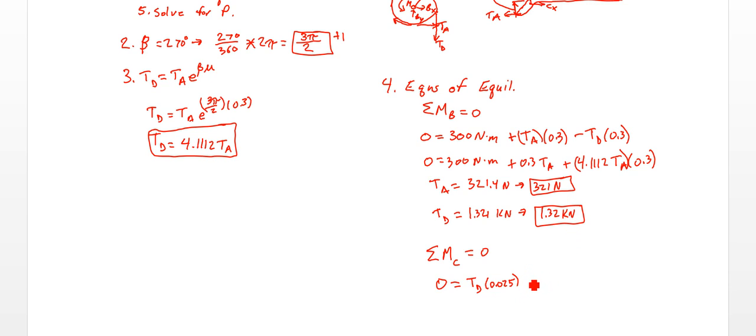Minus TA times 0.06. Minus P times 0.7. So I can move P over to the other side and divide by 0.7.